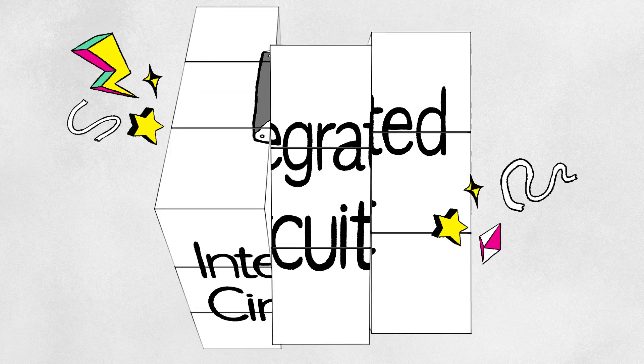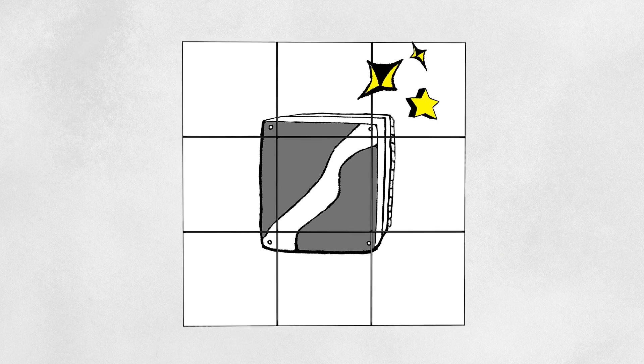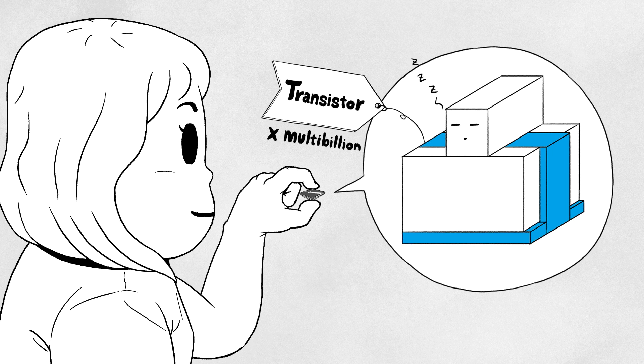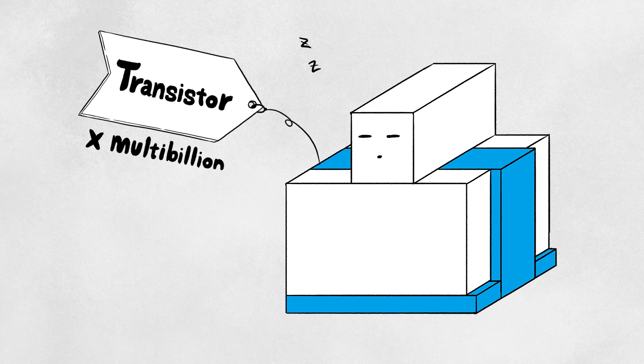Integrated circuits, which are made using such electronic properties, are generally called semiconductor chips. Billions of transistors lie inside a chip as small as a fingernail. These transistors are the building blocks of digital codes.